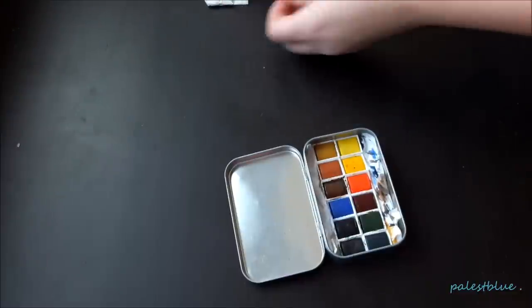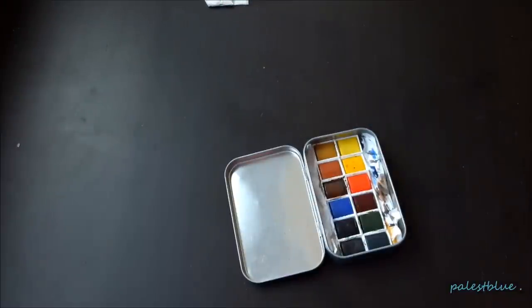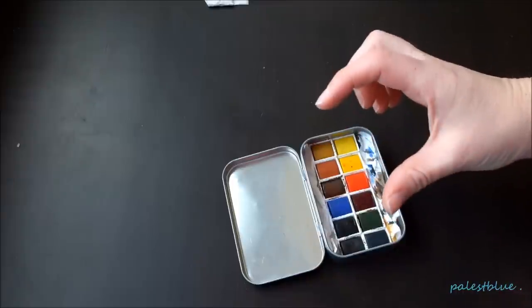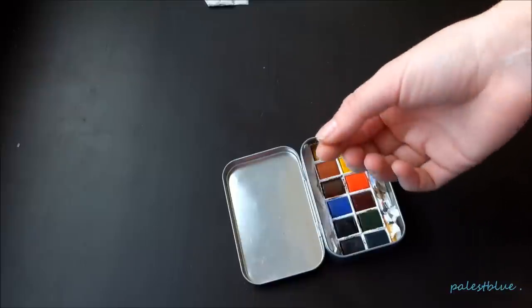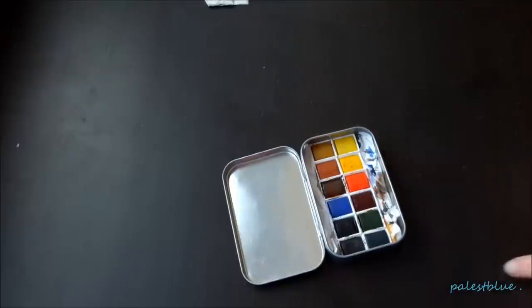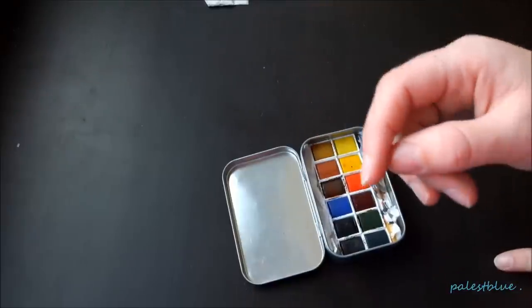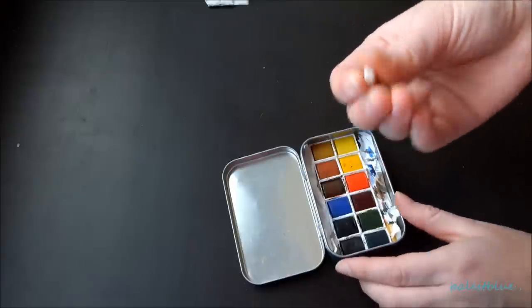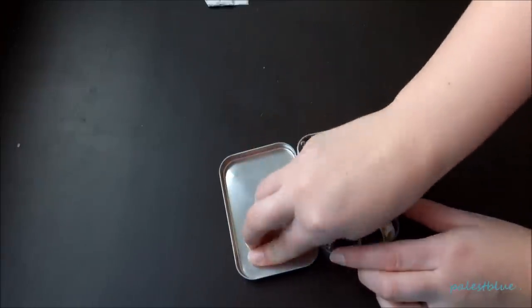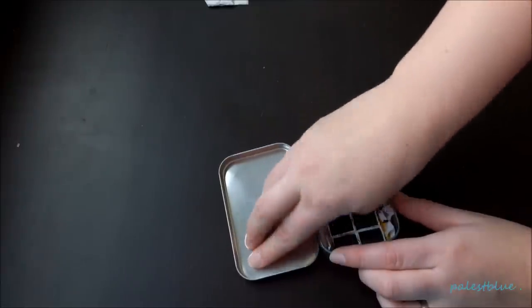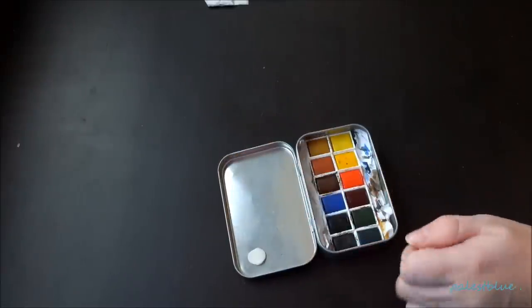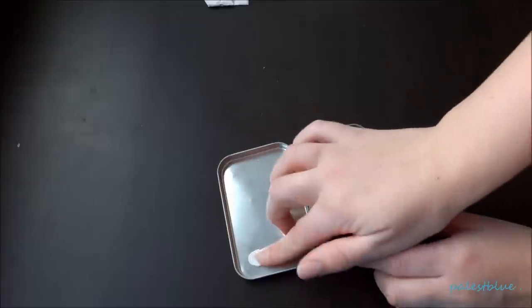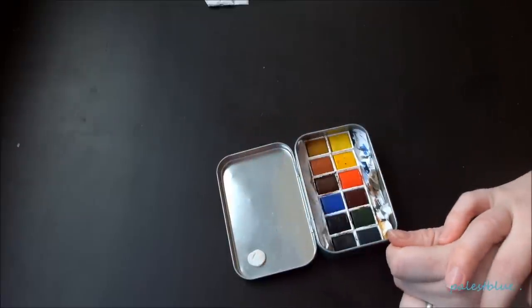Now you can either obviously use travel brushes for this, which have a water container or come with a water container. So you can actually fill them with water. I don't own brushes like that yet. So what I do is I stick some more clay glue here. And then I just take a simple bottle cap, a plastic bottle cap, and stick it here. And that functions as a water container.